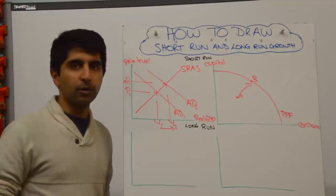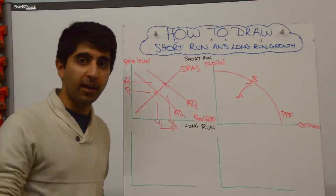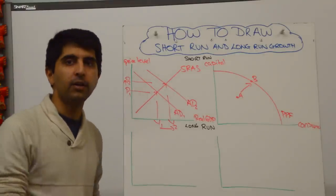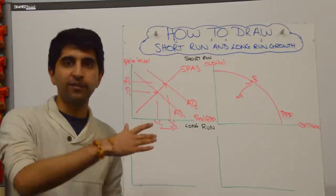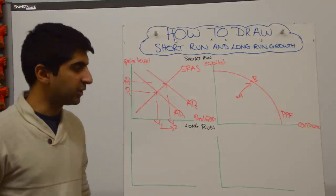So in your ADAS model, it's going to be a shift to the right of LRAS. I'm going to use the classical model on the left here. You could also shift the Keynesian LRAS to the right. That would be fine too.